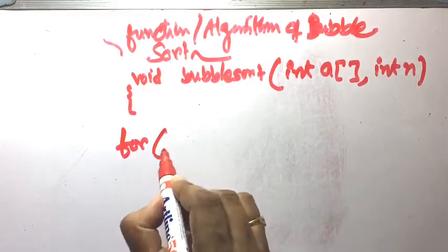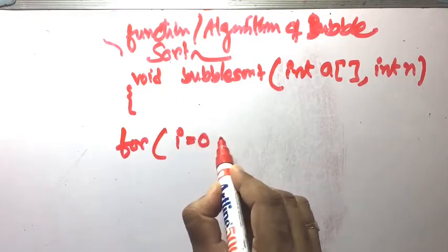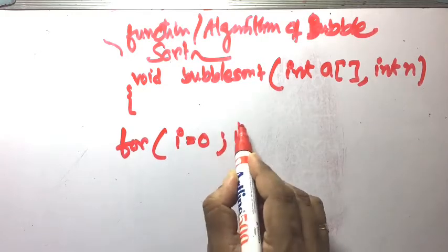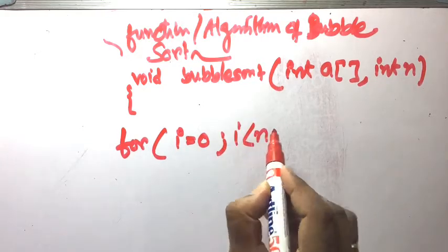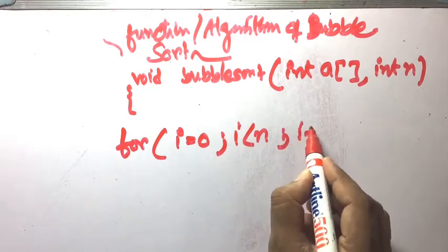First, declare any variables needed. Then a for loop: for i equal to 0, i less than n, i plus plus. This outer for loop controls the number of passes.